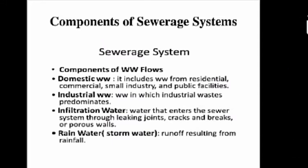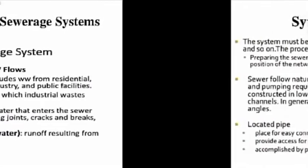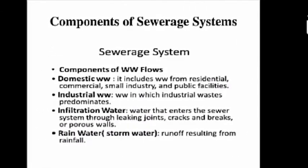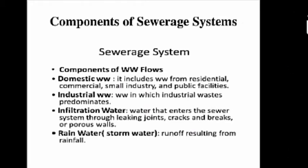The fourth type is storm water or rainwater — the runoff resulting from rainfall. So the four main components of wastewater in a sewerage system are: domestic wastewater, industrial wastewater, infiltration water, and storm water.